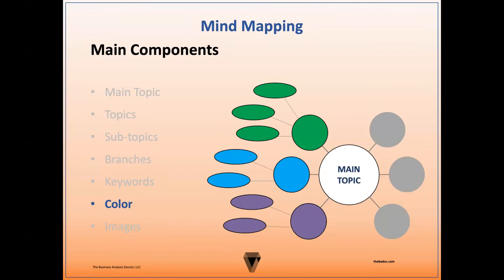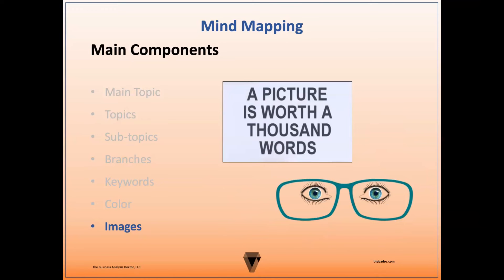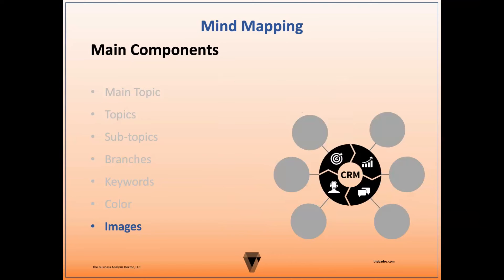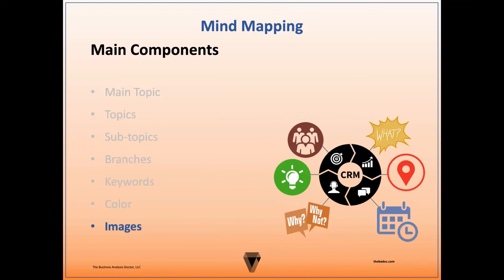Now let's talk color. Color is used as a differentiator to categorize and organize topics, subtopics, and their related associations. A common approach is to use a color for each topic, subtopic, and branches so that it's easier to see which elements are directly related to each other. The last component is images. Images are used to express large amounts of information that couldn't be expressed through the textual topic headings. It's common to have a large image for the main topic, smaller images for the topics, and keywords for the subtopics.